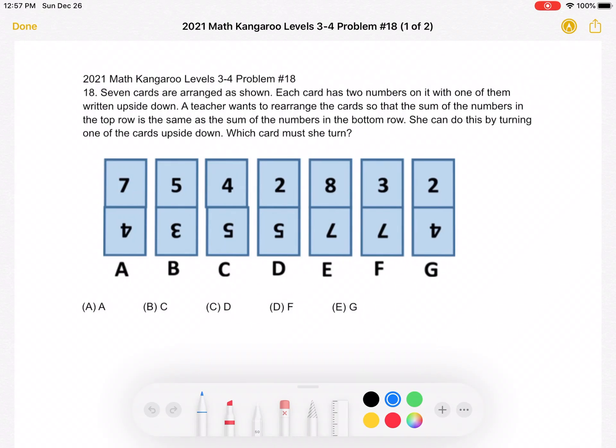This is the 2021 Math Kangaroo Levels 3-4 Problem Number 18. Seven cards are arranged as shown. Each card has two numbers on it with one of them written upside down.